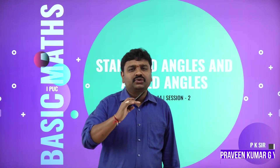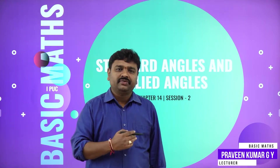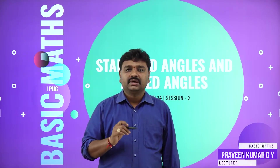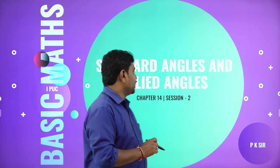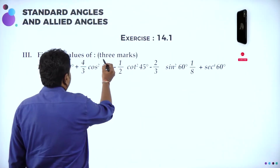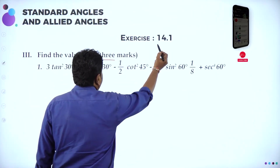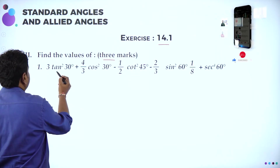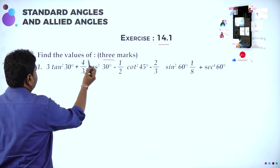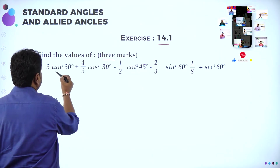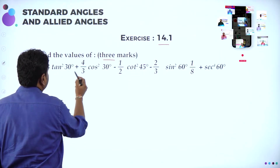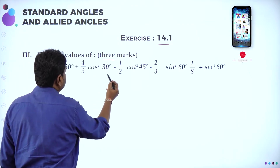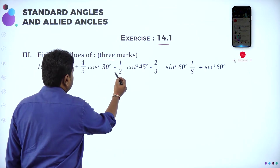Welcome to the session, dear students. Today we will go ahead with the problems of standard angles — 3-mark problems from exercise 14.1. Now they want you to find the values of: 3 tan² 30 + (4/3) cos² 30 − (1/2) cot² 45 − (2/3) sin² 60...